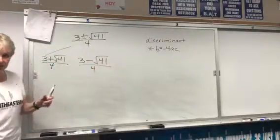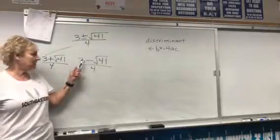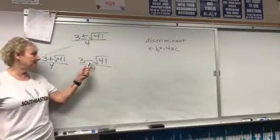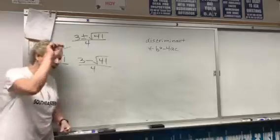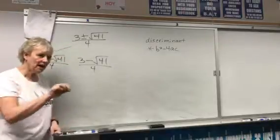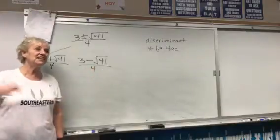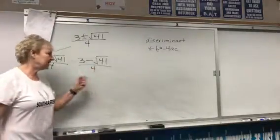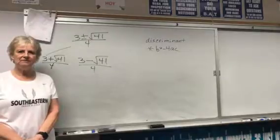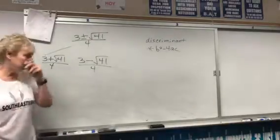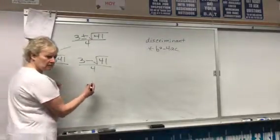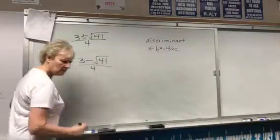Let's talk about how to do this on a calculator. You're going to take 3, then minus, then the second button, x squared, that's your square root, 41, and then you've got to hit equal, and then divide by 4. What do you get? Negative 0.85.